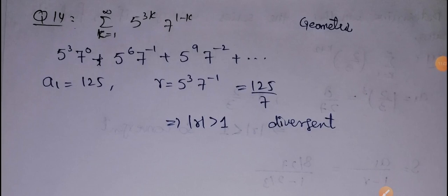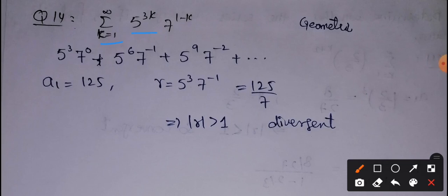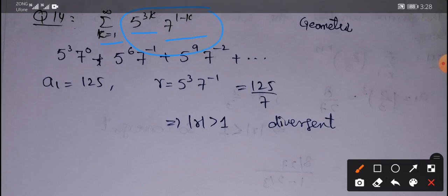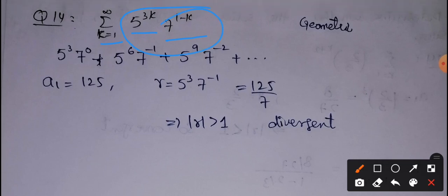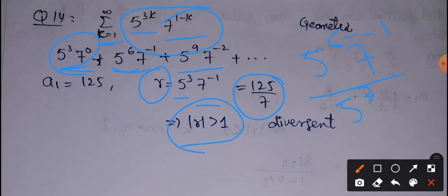Question number 14: the series summation k from 1 to infinity of 5^(3k) times 7^(1-k). We write down the first few terms to find the common ratio. Computing a_2/a_1 gives 5^6 times 7^(-1) divided by 5^3 times 7^0, which simplifies to 5^3 times 7^(-1), that is 125/7. Since r equals 125/7, which is greater than 1, the series is divergent.